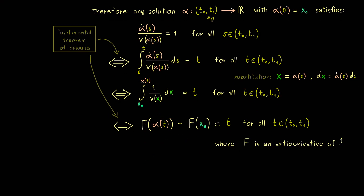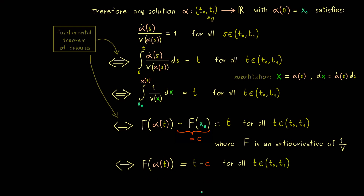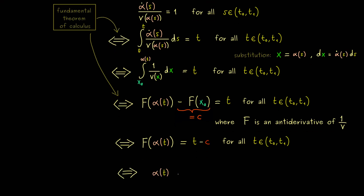In the case that we can find the antiderivative, the ODE is almost solved. Let's call minus F of x₀ just the constant c. Putting this constant on the right hand side, we see that alpha(t) is almost isolated on the left. We just have to find the inverse of F to isolate alpha(t), and locally around x₀ this is always possible by our assumption. So the solution is F-inverse of t plus c.